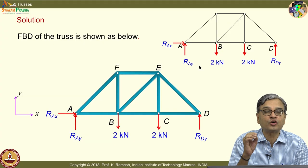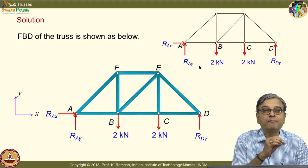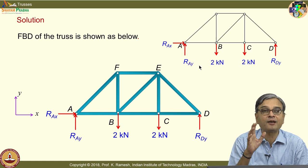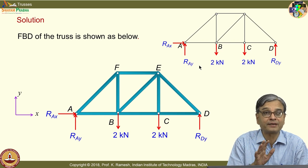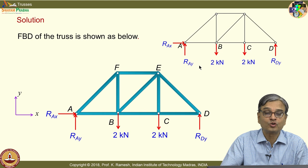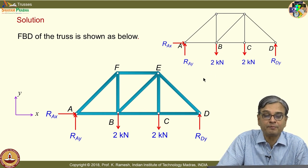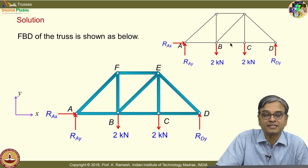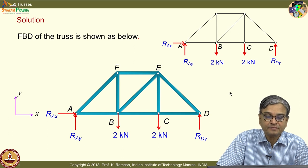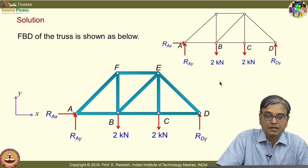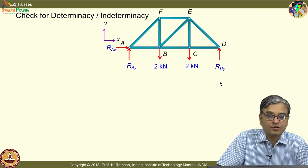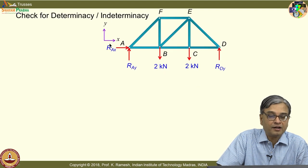If a member is continuous through a joint, the member will behave like a beam and it will bend — we do not want that to happen. You have to recognize that this is a collection of two-force members bound together. That is a very nice definition. The next step is to find the unknown forces, but before that, we will check whether the problem is solvable using the equations of statics.